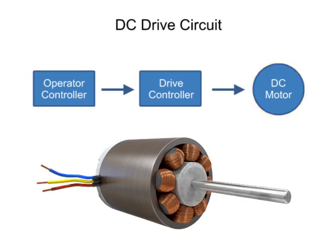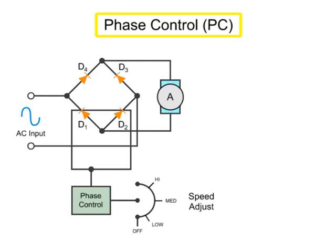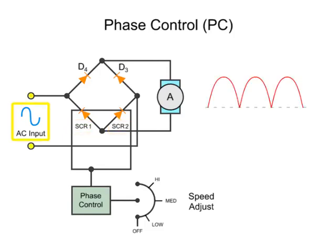Let's look at the phase control method in a bit more detail. Phase control works by modulating a gated diode-like device, such as a silicon-controlled rectifier, or SCR, into and out of conduction at a predetermined phase of a rectified AC half-wave.